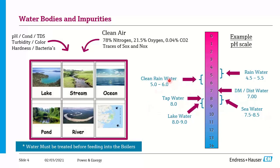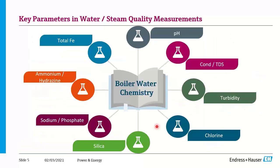Tap water we consume is normally around pH 8, and lake water is between 8 and 9. This means water must be treated before feeding into the boilers. Treatment is very, very essential to carry out further steam production.